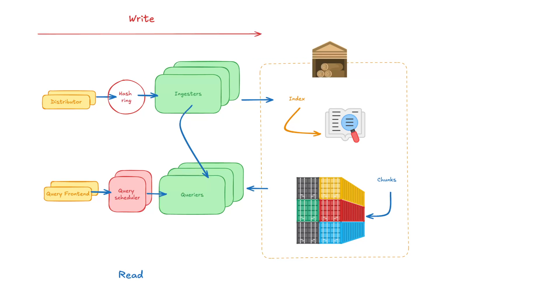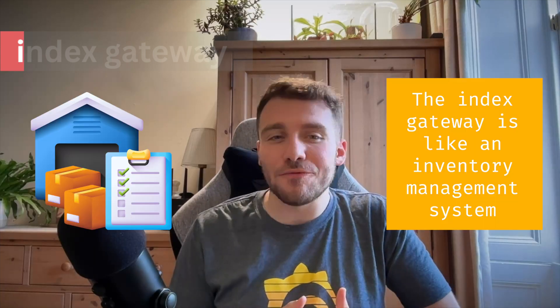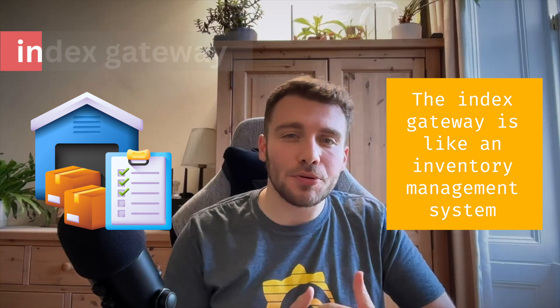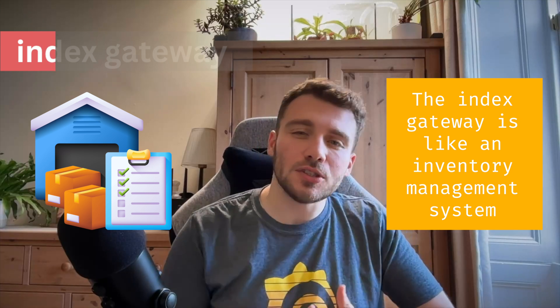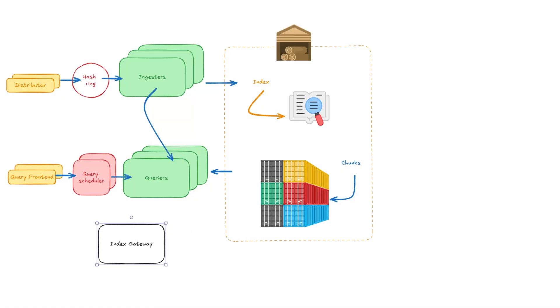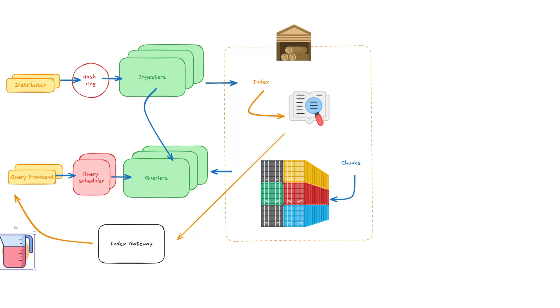We have now covered both the read and write path components of Loki. However, some of the components operate in the background and serve automation roles. Starting off, we have the index gateway, which you can imagine as the inventory management system — it keeps track of all of the processed log pieces. It is responsible for handling and serving metadata queries. Metadata queries look up data from the index. For instance, the query frontend requests the estimated log volume to decide on how to shard user queries. The queriers also request chunk references for a given query through the index gateway, so they know which chunks to fetch.